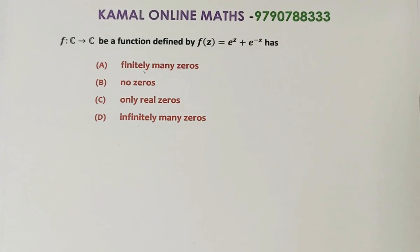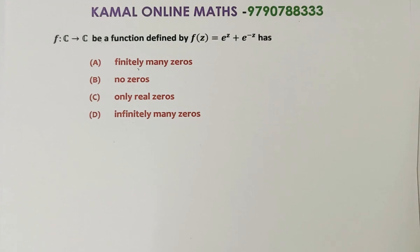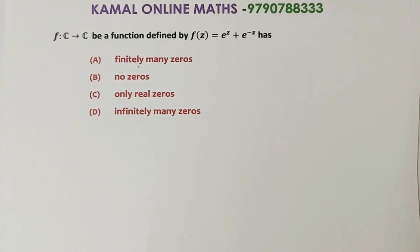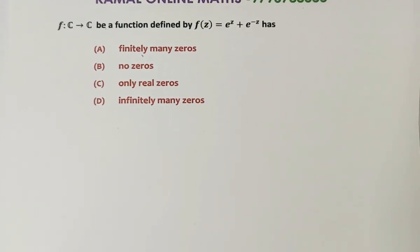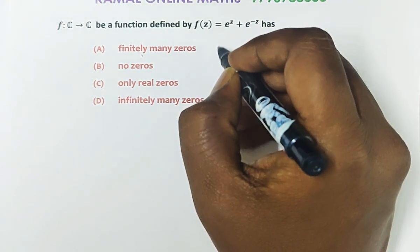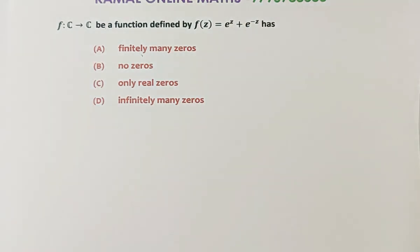Next question: let f be a function from ℂ to ℂ defined by f(z) = e^z + e^(−z). The options are: finitely many zeros, no zeros, only real zeros, or infinitely many zeros. We need to find the zeros of f(z) = e^z + e^(−z), i.e., when does f(z) = 0?